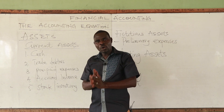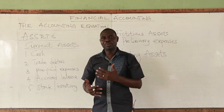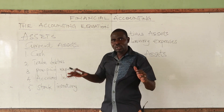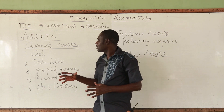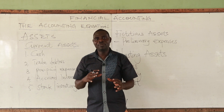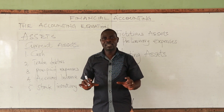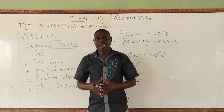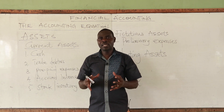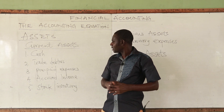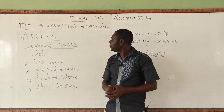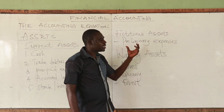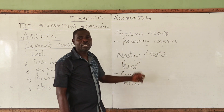We looked at fixed assets and current assets, identified the types of fixed assets — tangible and intangible — and also looked at current assets. We further looked at fictitious assets and wasting assets. These are all resources controlled by a business. Take note of them; we will be meeting them often.